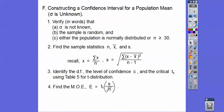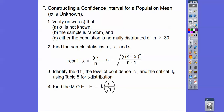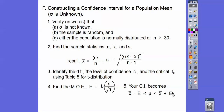Identify the degrees of freedom, the level of confidence, and the critical t-score using table 5 for the t-distribution. Then find the margin of error, which is the t-score times the sample standard deviation divided by the square root of n. Your confidence interval then becomes the sample mean plus or minus the margin of error E.